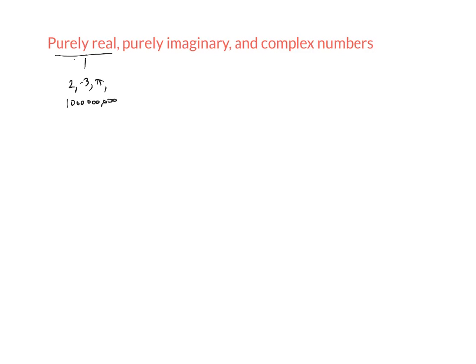So now that we know about i, we're going to talk about different types of numbers that involve i and don't involve i. We've got what are called purely real numbers. Purely real numbers are numbers like the ones you're used to dealing with, like 2 and negative 3 and pi and a billion. These are all purely real numbers.